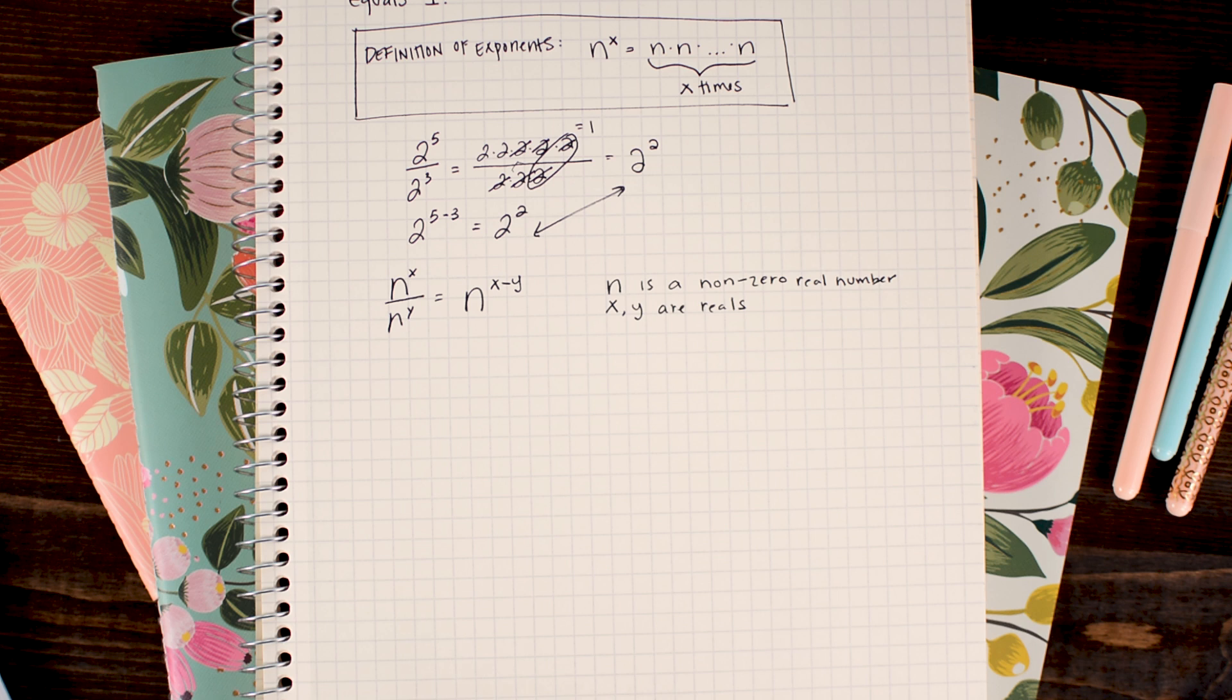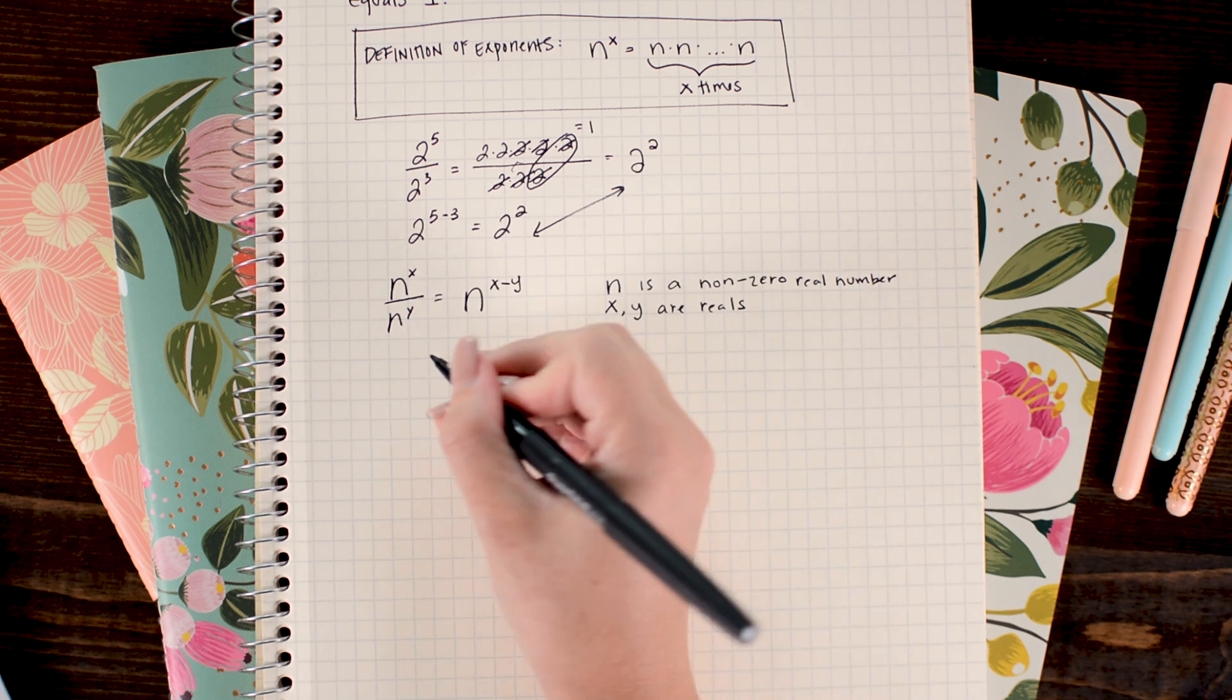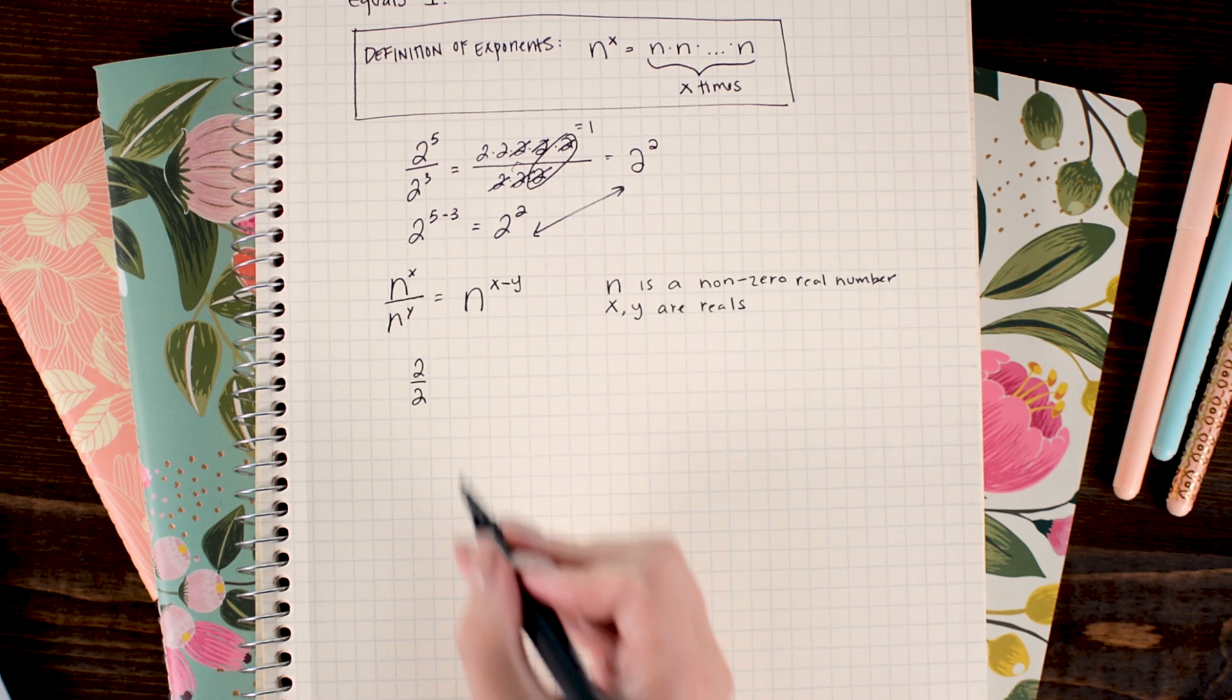Because this is honestly gonna be so quick you're probably gonna be like wow, I didn't know it was that easy to understand why the zero power rule works. So let's just do an example. I'm gonna say 2 divided by 2 equals 1.